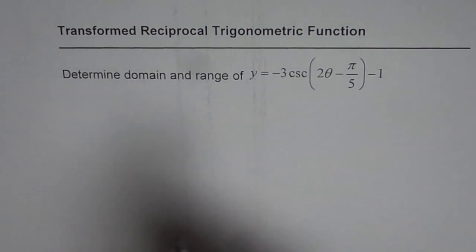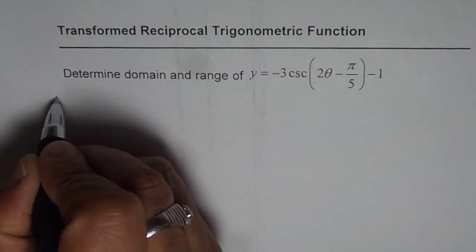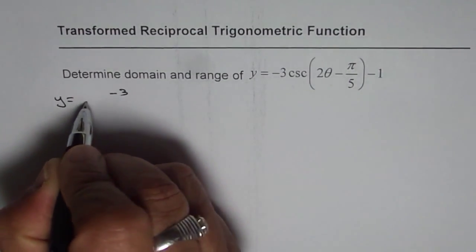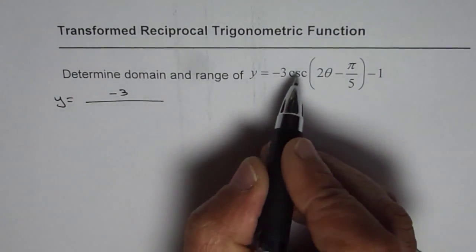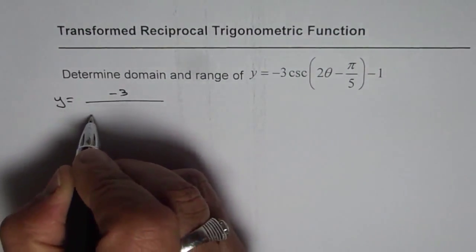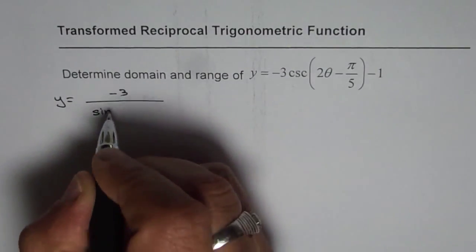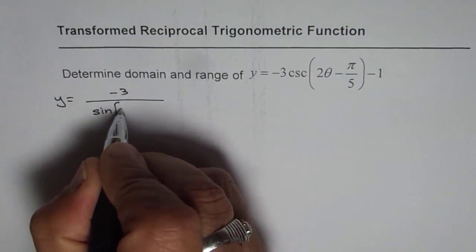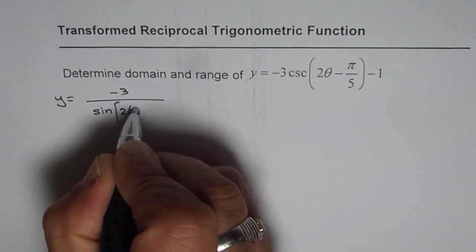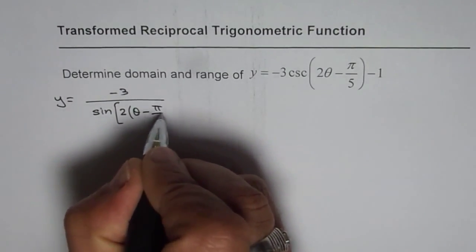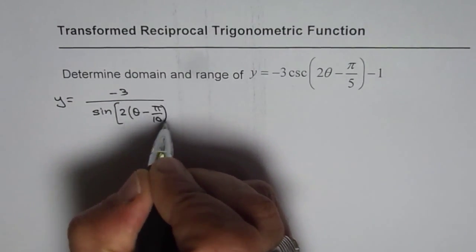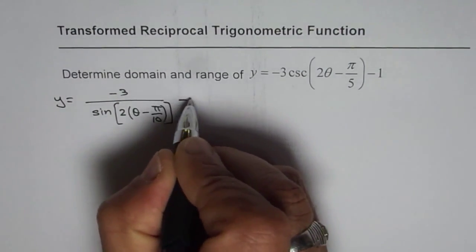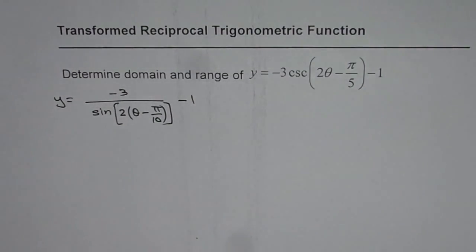We can rewrite this function as y equals minus 3 divided by sine, since cosecant is the reciprocal of sine. We can factor out 2 to get 2 times (θ − π/10) minus 1. So that is the function.